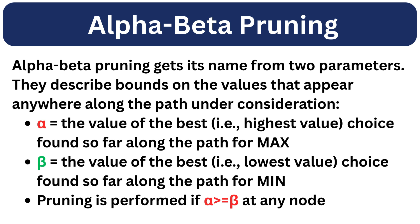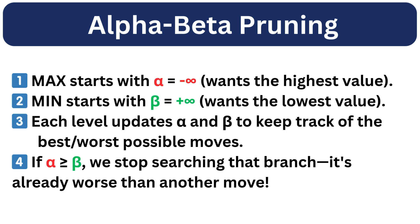Alpha-beta pruning gets its name from two parameters that describe the bounds on values appearing along the path under consideration. Alpha is the highest value max can guarantee so far. Beta is the lowest value min can guarantee so far. The pruning condition is: if alpha is greater than or equal to beta at any node, we stop searching that branch. Max starts with alpha equal to negative infinity and min starts with beta equal to positive infinity. Each level updates alpha and beta to track the best and worst possible moves. If alpha is greater than beta, we stop searching that branch because it is already worse than another move.